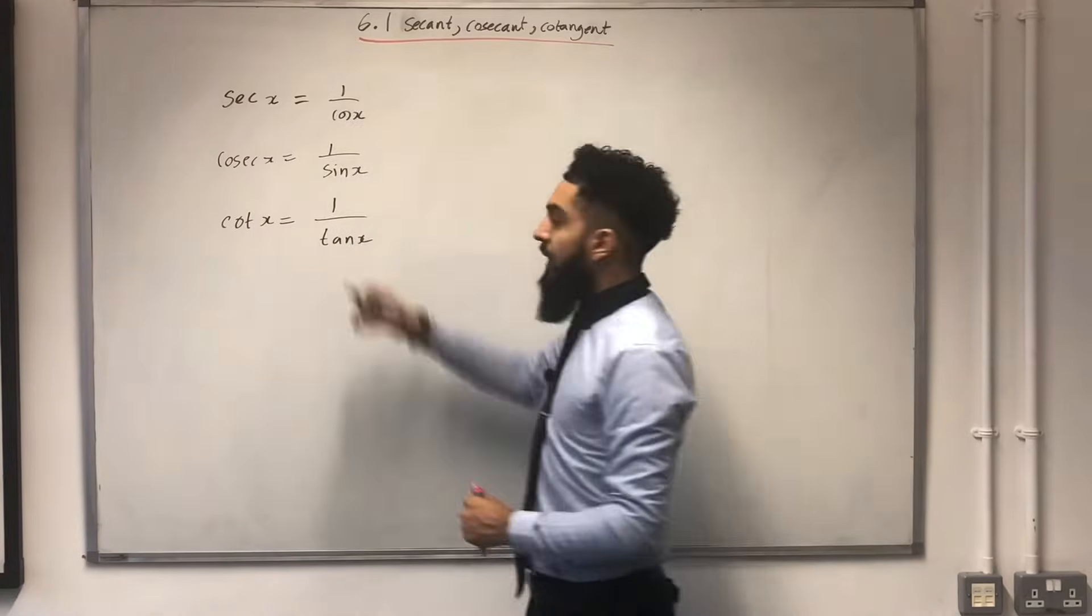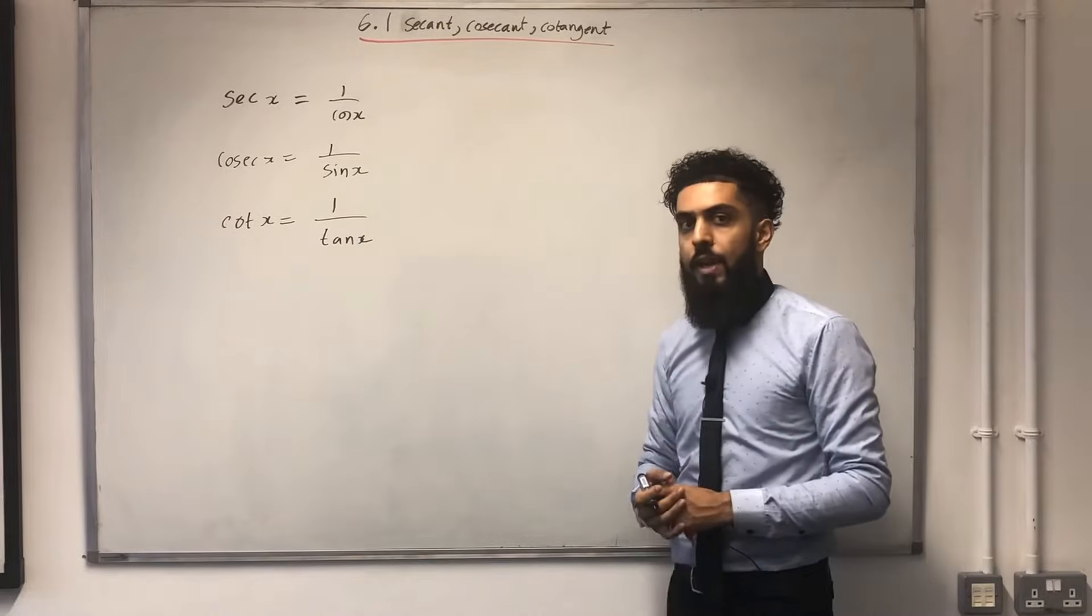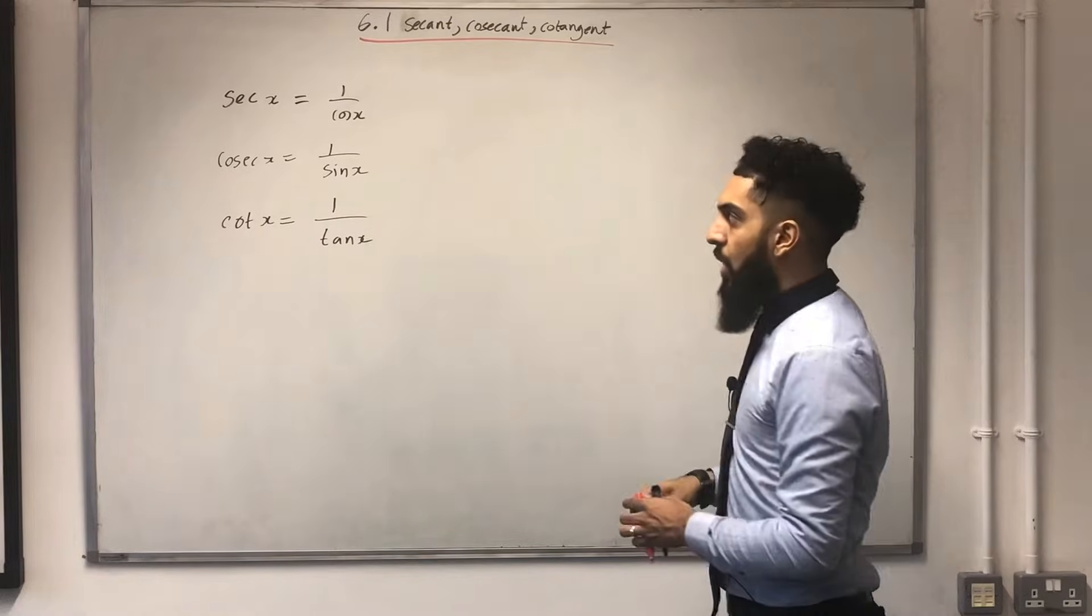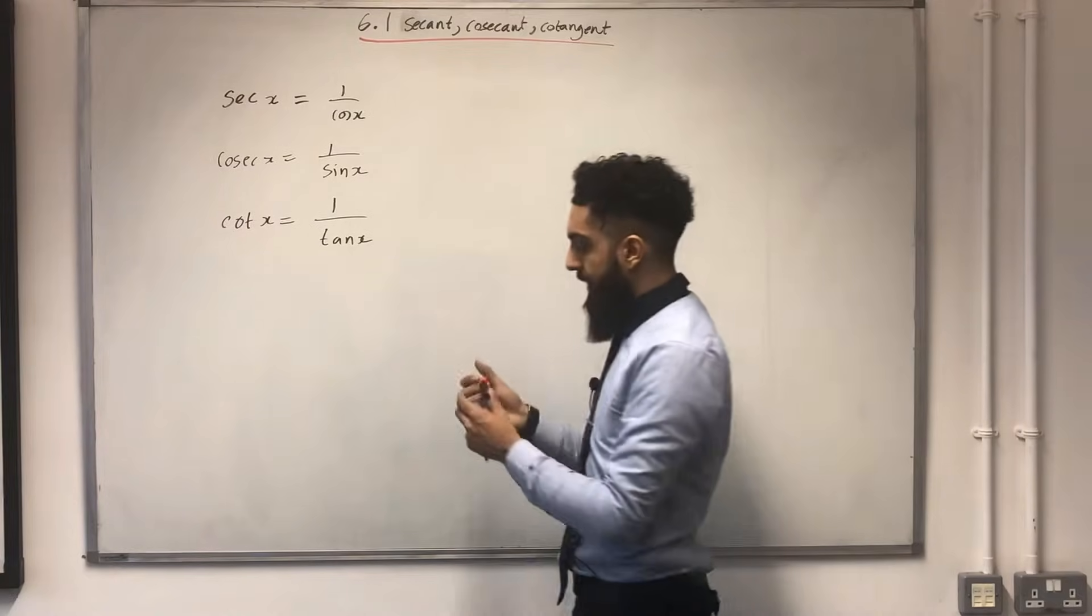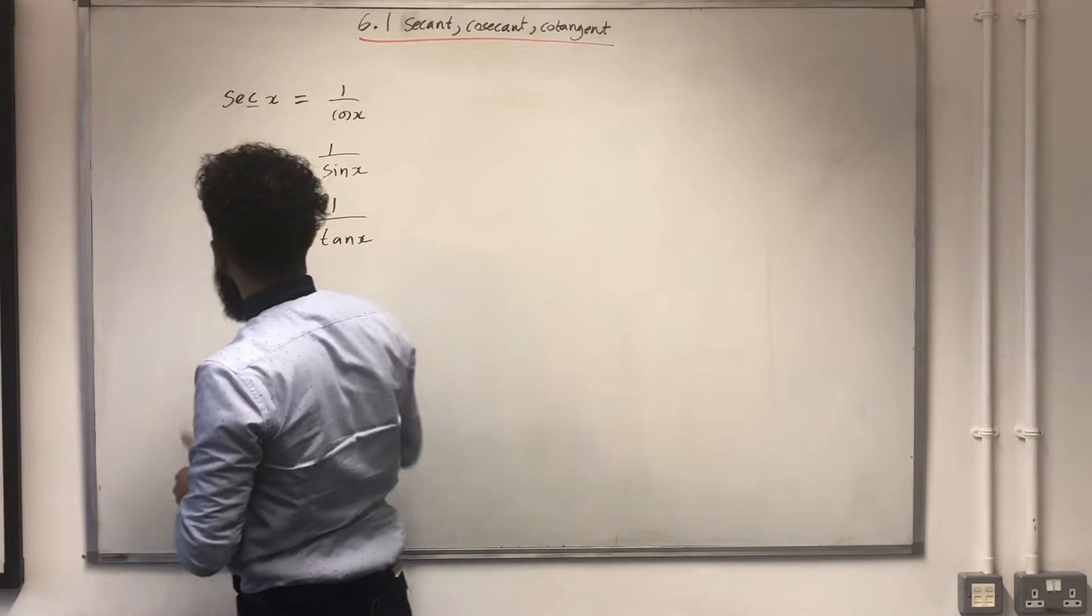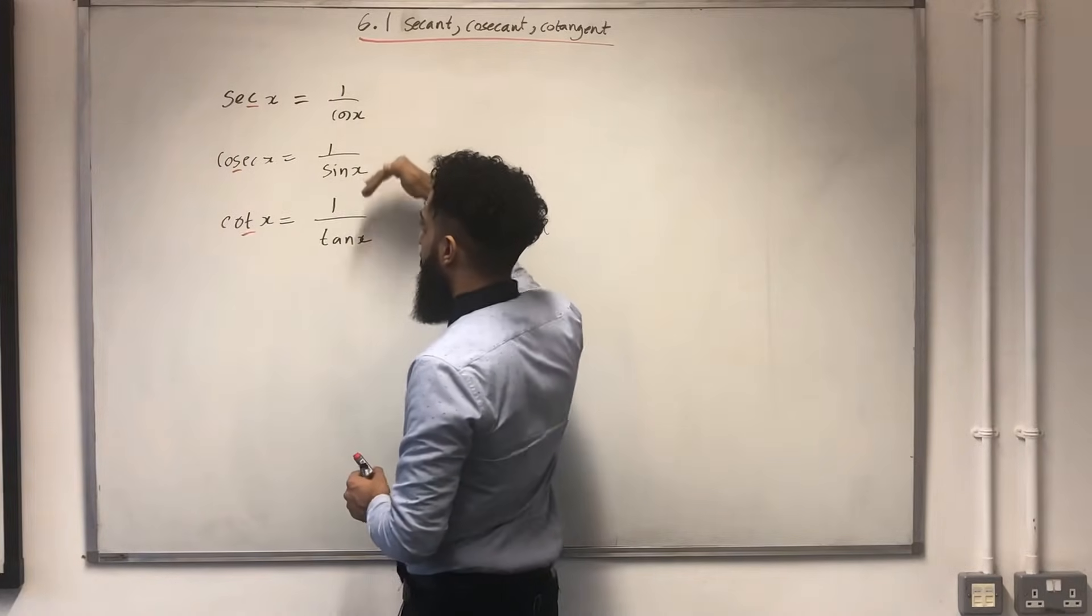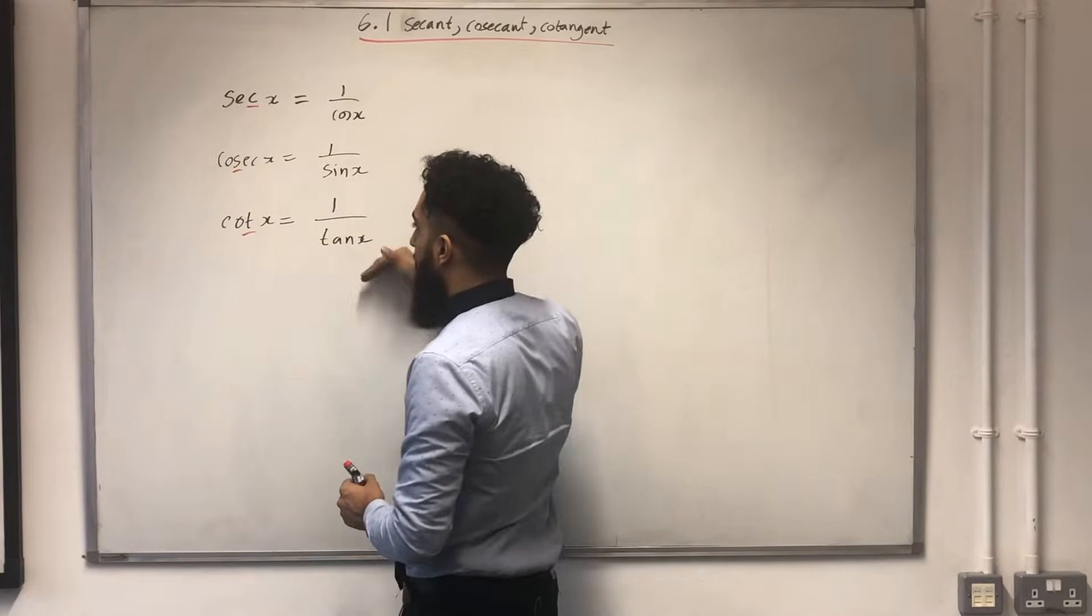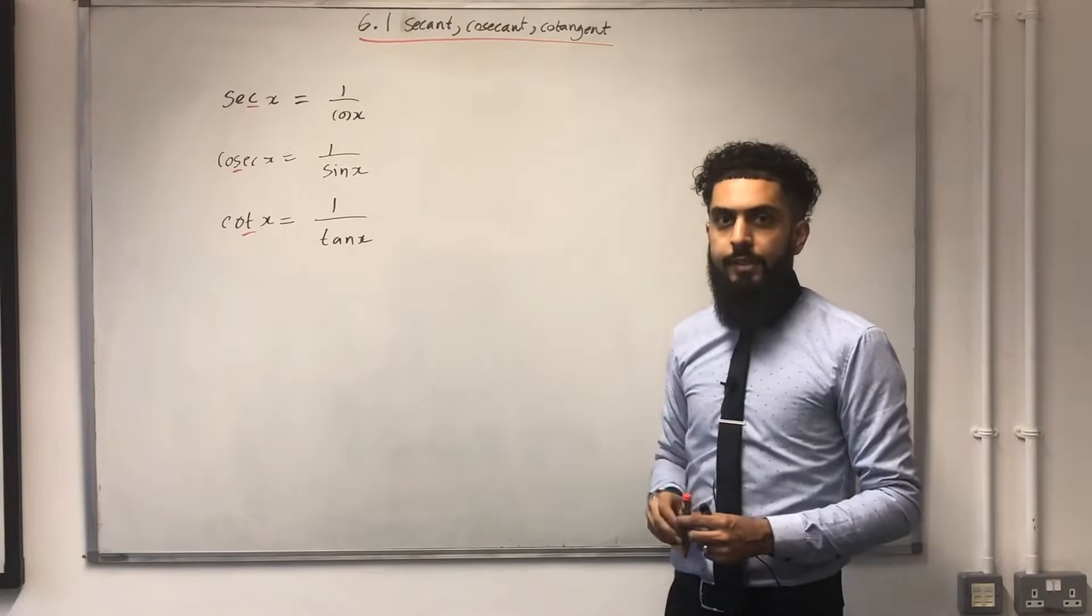Have a look at these three very carefully, ladies and gents. Something very juicy is happening over here. I'm going to underline the third letter for each of sec x, cosec x and cot x. C, 1 over cos x. S, 1 over sin x. T, 1 over tan x. That's the way to memorize this. Just have a look at the third letter.